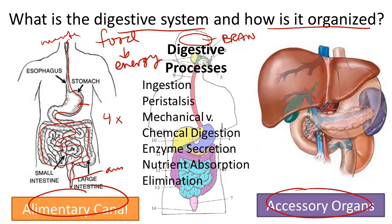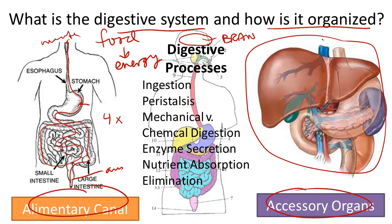Like anything in life, it's helpful to have a few friends around. The friends of the digestive system are mostly part of the endocrine system and are sometimes composed of glands. They include organs like the liver, the pancreas, the gallbladder, and salivary glands. Other organs such as the teeth and the tongue also help with digestion.